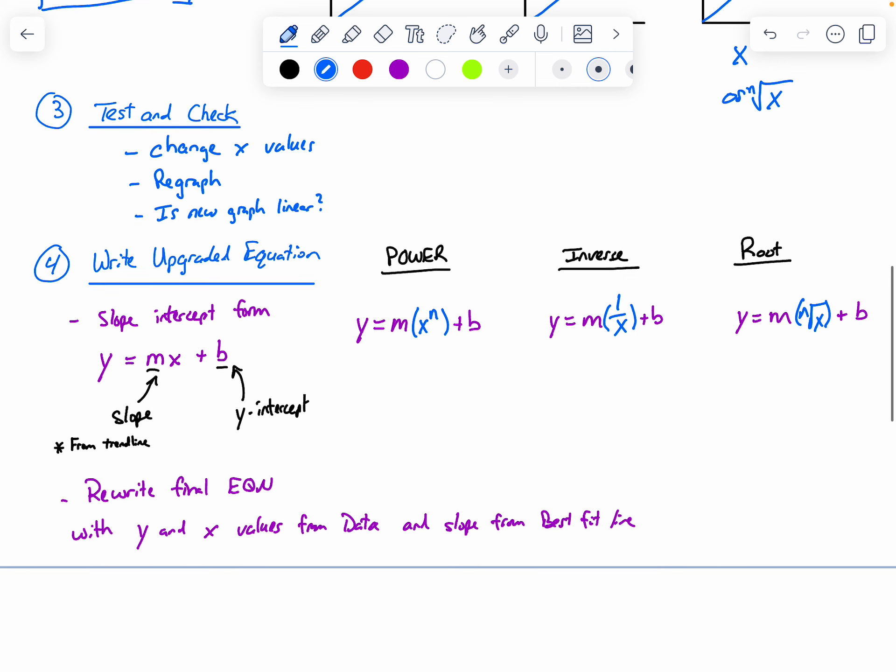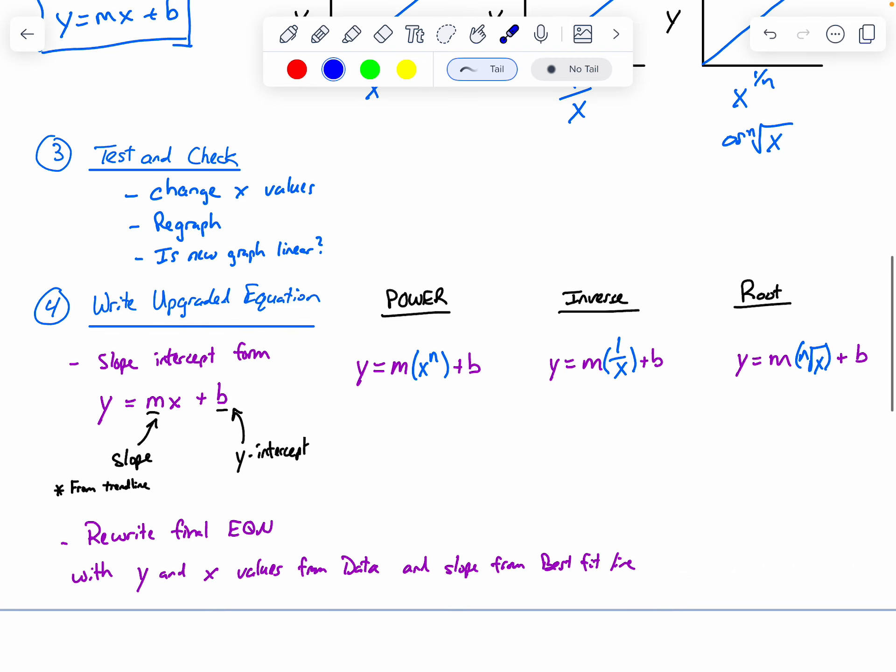Then the last step is to take that information, and what was your x and y value from your data, and rewrite using the slope from your best fit line. So you should end up with an equation in slope-intercept form as your fourth step.